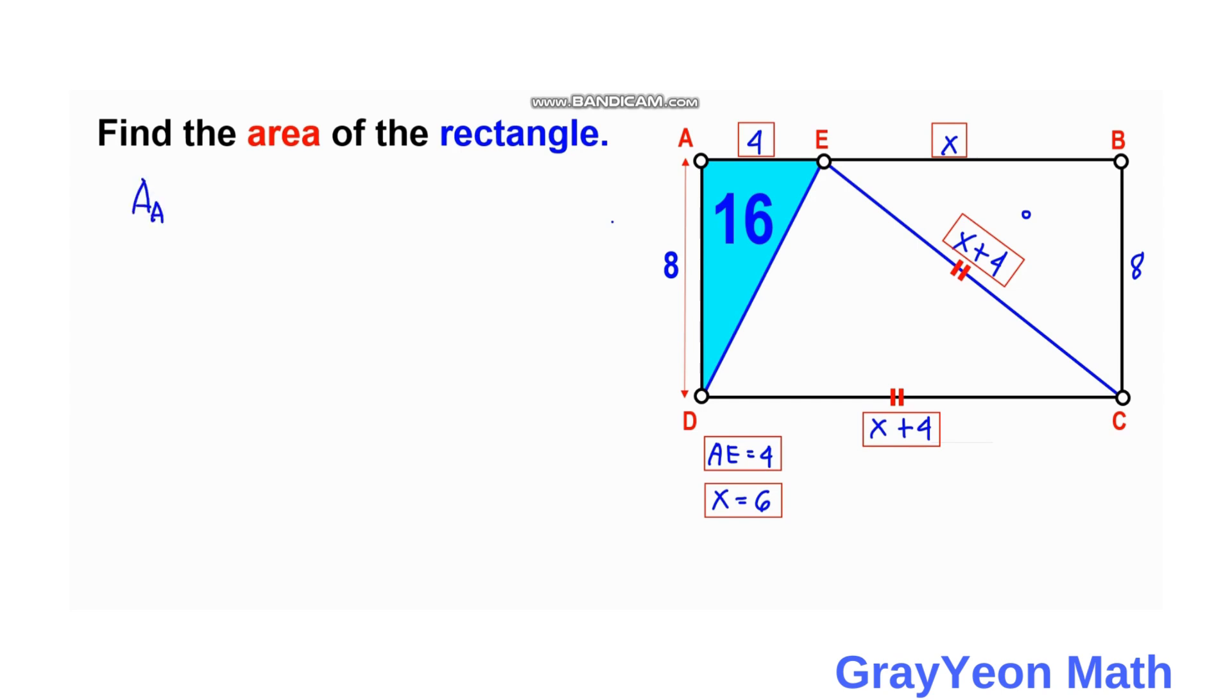Now for the area of rectangle ABCD, it is simply equal to the length times the width. The length is X plus 4 and the width is 8. We substitute X with 6, so 6 plus 4 times 8 equals 10 times 8. Therefore, the area of ABCD equals 80 square units, and that is our answer.